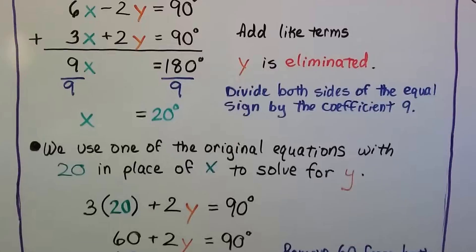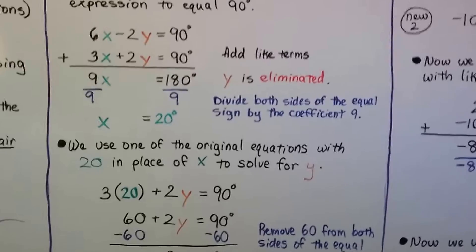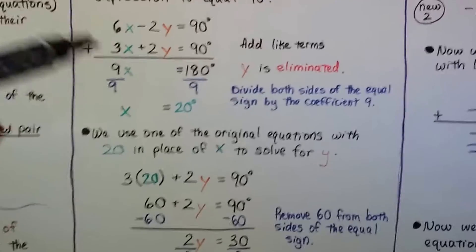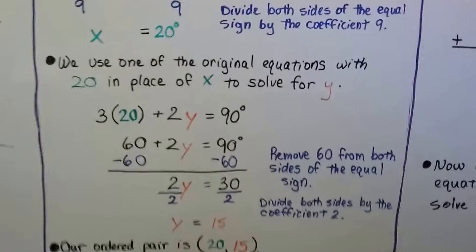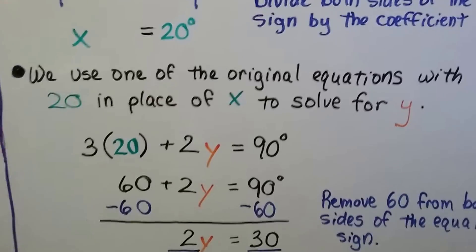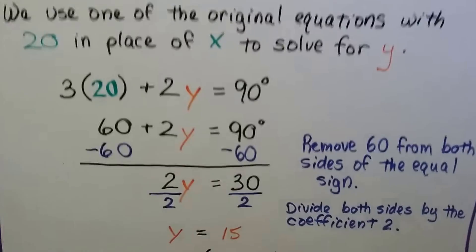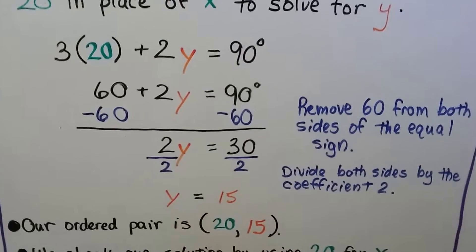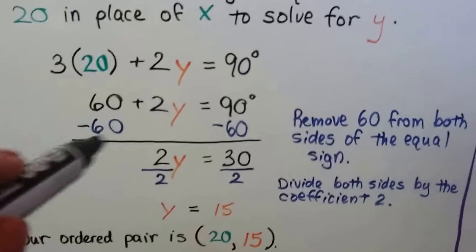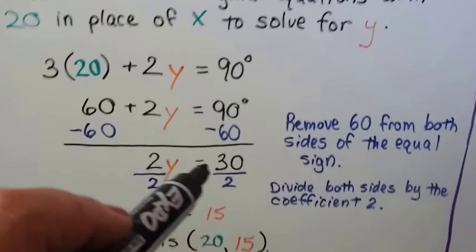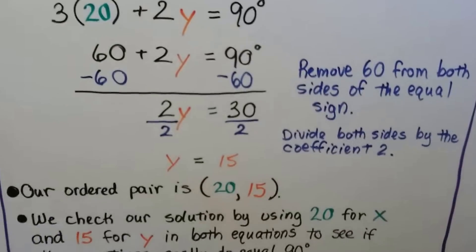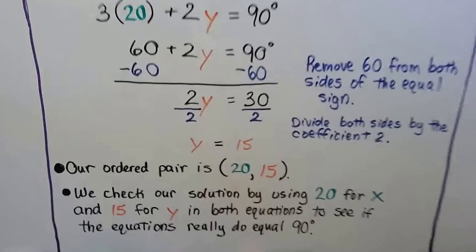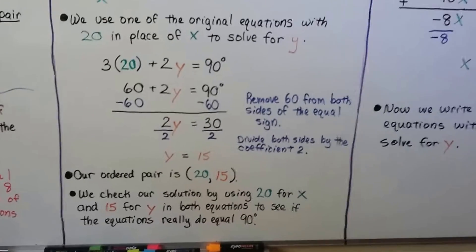We use one of the original equations with 20 in place of x to solve for y, because now we know x equals 20. We can use this second equation, 3x plus 2y equals 90. We put 20 in place of the x, and we have 3 times 20 plus 2y equals 90. That gives us 60 plus 2y equals 90. We can remove 60 from both sides of the equal sign, and that eliminates this as a zero pair, and we're left with 2y equals 30. We divide both sides by the coefficient 2. We get 1y equals 15. Now, we have our ordered pair. We know x is 20, and y is 15.